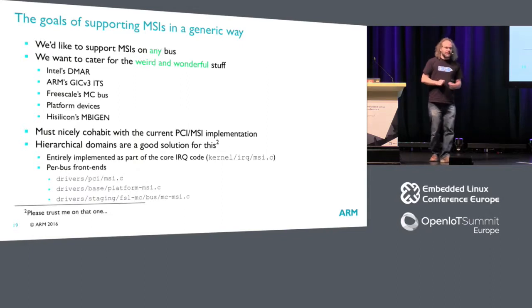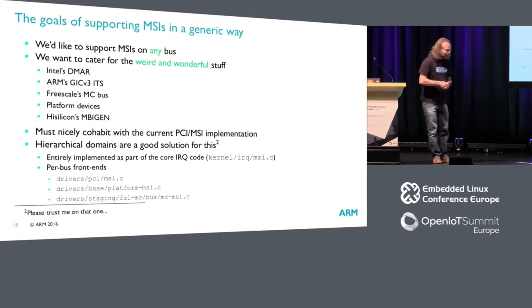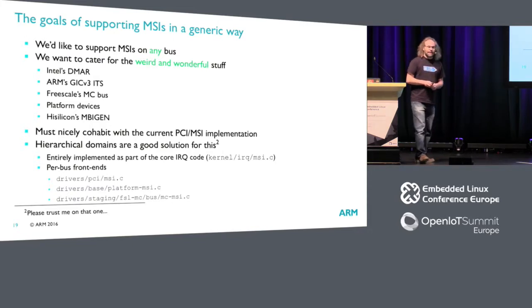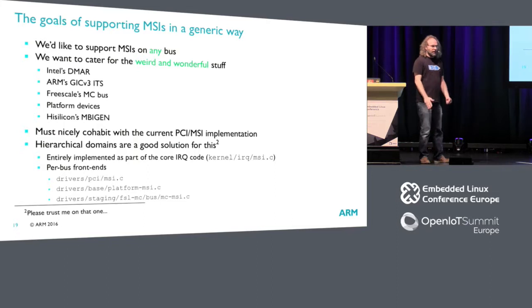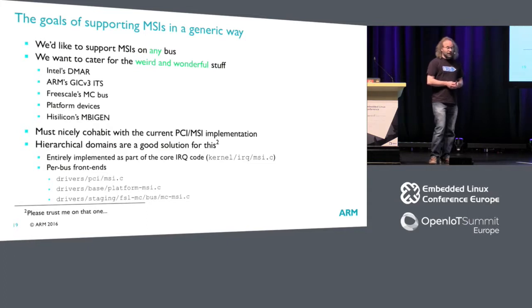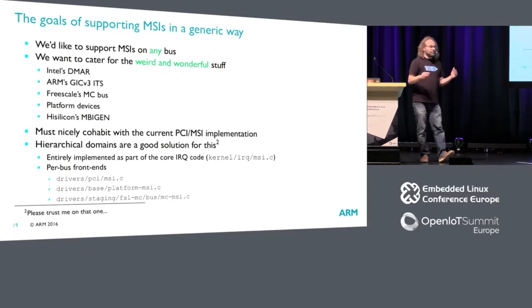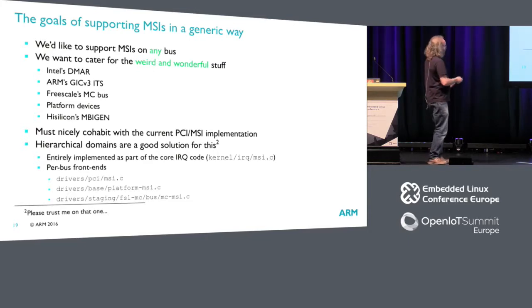We decided about 18 months ago that it would be nice to support MSIs in a really generic way. There was a lot of discussion between Thomas Gleixner, Jean Glee who was at Intel at the time, and myself to figure out how to structure things. We wanted to support a wide range of hardware: the Intel DMAR which remaps memory but also remaps interrupts, the GICv3 ITS which can be seen as page tables for interrupts, a Freescale MCBus where they assemble discrete functions into a virtual device that generates things that look like MSIs, some platform devices, USB3 can have MSIs implemented as a platform device, and something called MBI Gen. Also a design goal was to fit nicely with the existing PCI MSI implementation. It turns out that hierarchical domains are really, really nice for that - we managed to implement most of it in core code, not architecture-specific, not bus-specific, with just a few frontends that are bus-specific.